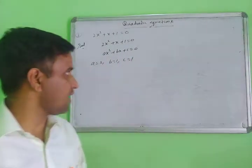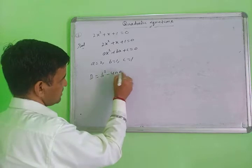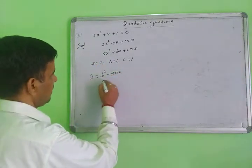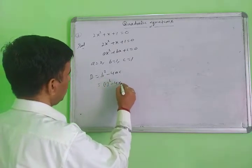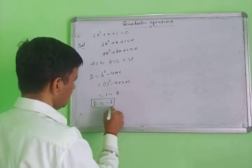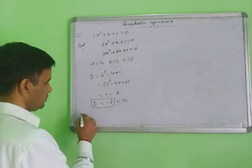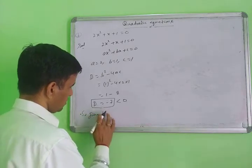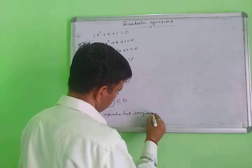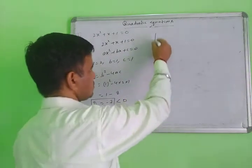We check: D = b² − 4ac = 1² − 4(2)(1) = 1 − 8 = −7. Since D = −7 is less than zero, the given equation has imaginary roots. Because D is negative, the given equation has imaginary and unequal roots.